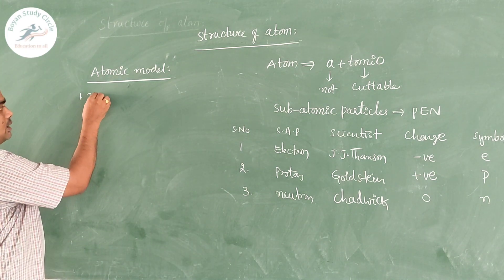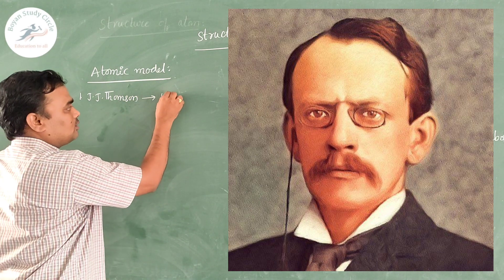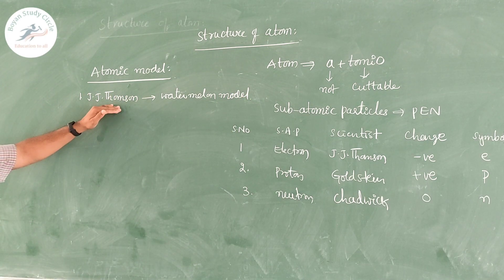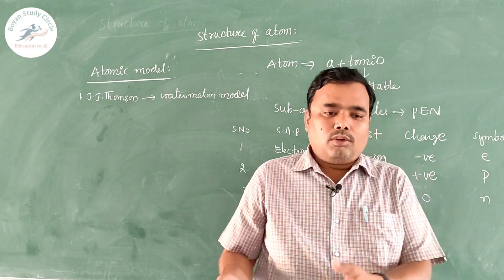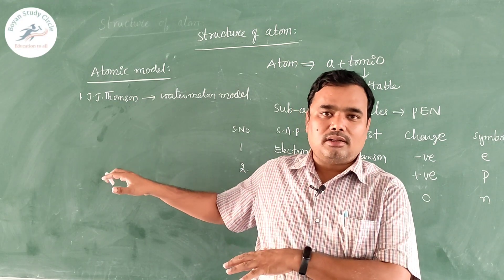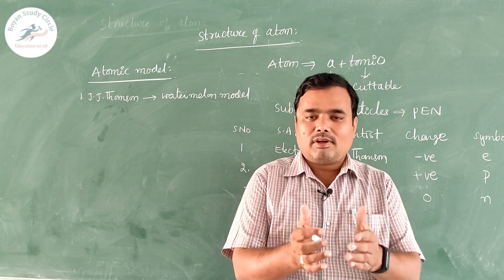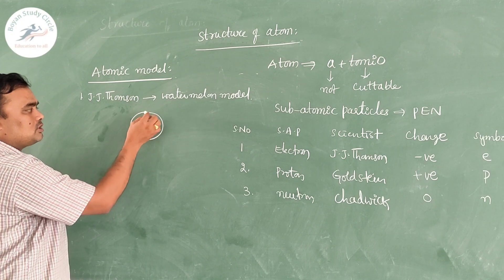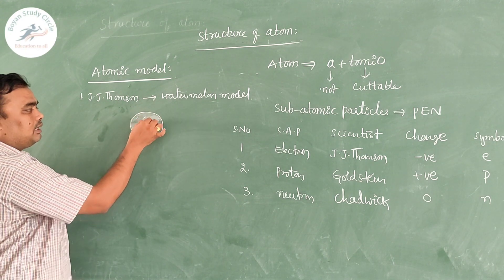The first atomic model was proposed by J.J. Thomson, and this model is also called the watermelon model. At the time of J.J. Thomson only electrons were discovered — he himself invented the electrons — no neutrons or protons were discovered, but atom is electrically neutral. So if there are negative charges, there should be some positive charge. That is why he assumed that positive charge is located all over the atom and electrons are embedded inside the positive charge.